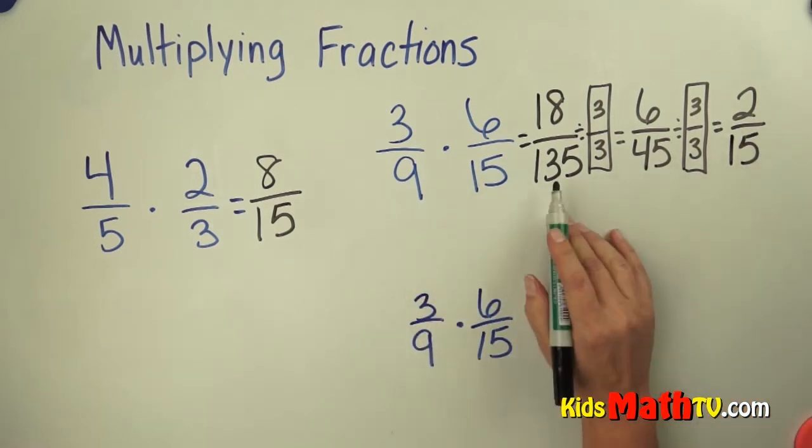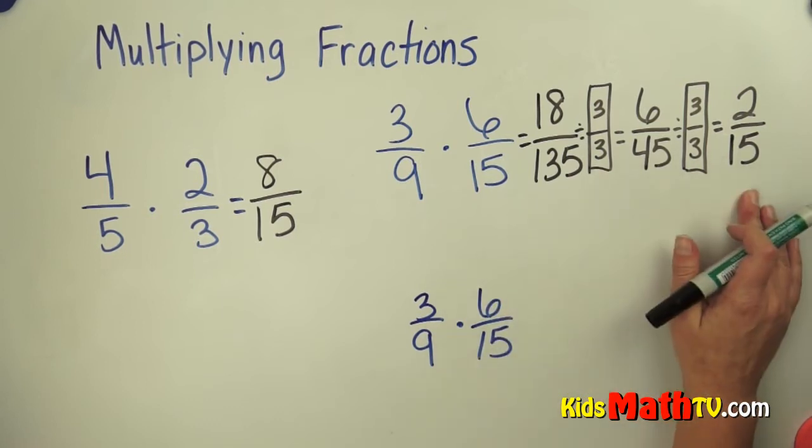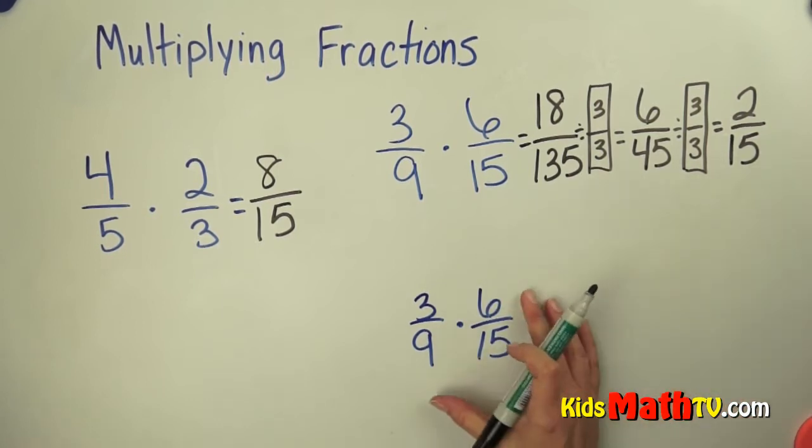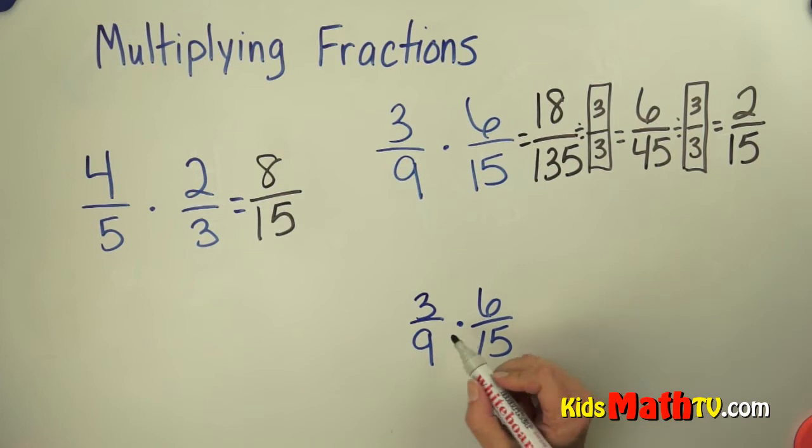Now when we do it this way we get these kind of large numbers. And this is fine, this is the right answer. There is another way we can do it. We can take that same problem, 3 ninths times 6 fifteenths, and do what we call cross cancelling.